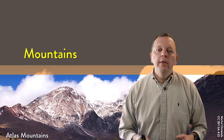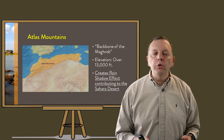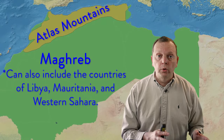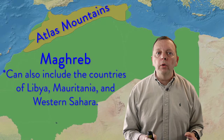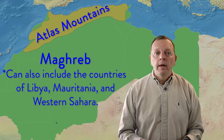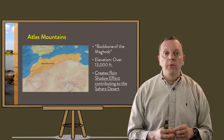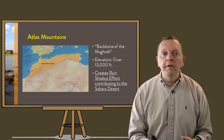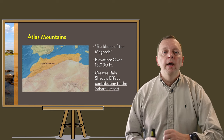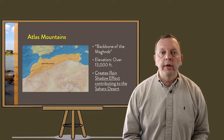Then there are the mountains. In the northwest portion of northern Africa are the Atlas Mountains, also known as the backbone of the Maghreb — the western region of the Arab world that includes Morocco, Algeria, and Tunisia. The Atlas Mountains rise to about 13,000 feet, and through the rain shadow effect, they block precipitation from the Atlantic Ocean from reaching the Sahara Desert.